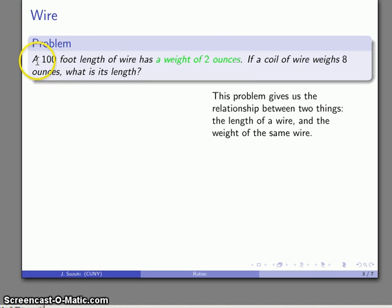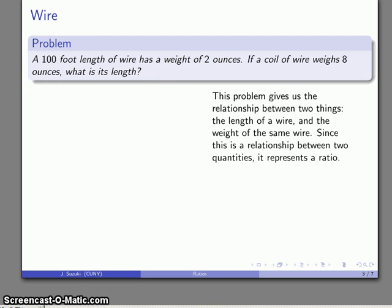We can't compare this length of wire to this weight here because it's not the same wire. But we do know that this length here, 100 feet, has a weight of 2 ounces, and they are the same object. So it is meaningful to consider this ratio between the 100 feet of length and the weight of 2 ounces. Because I have a relationship between two quantities, there is a ratio involved here. I'm going to focus on the numbers, 100 and 2, and not necessarily about the length and weight.